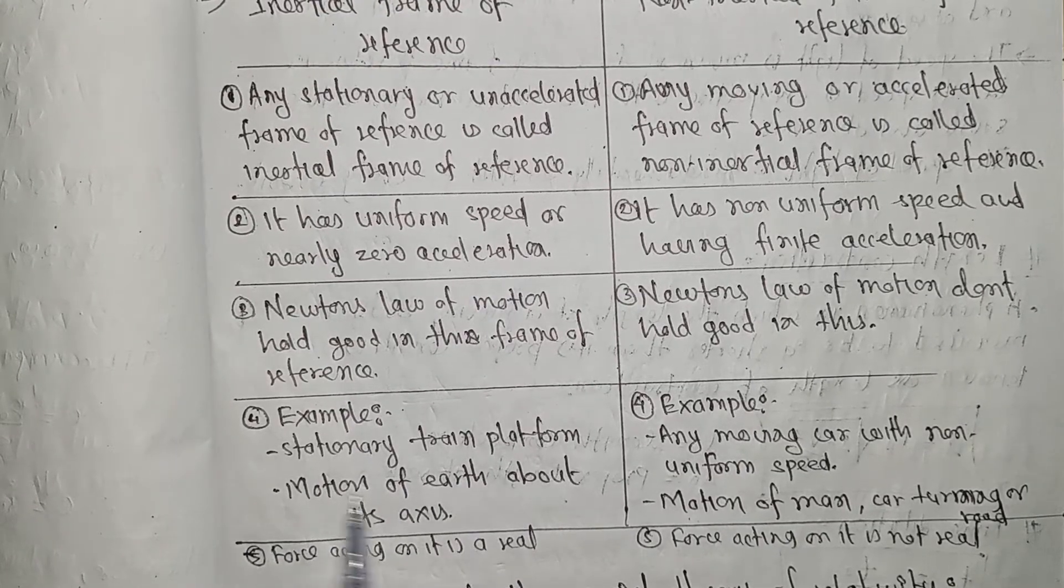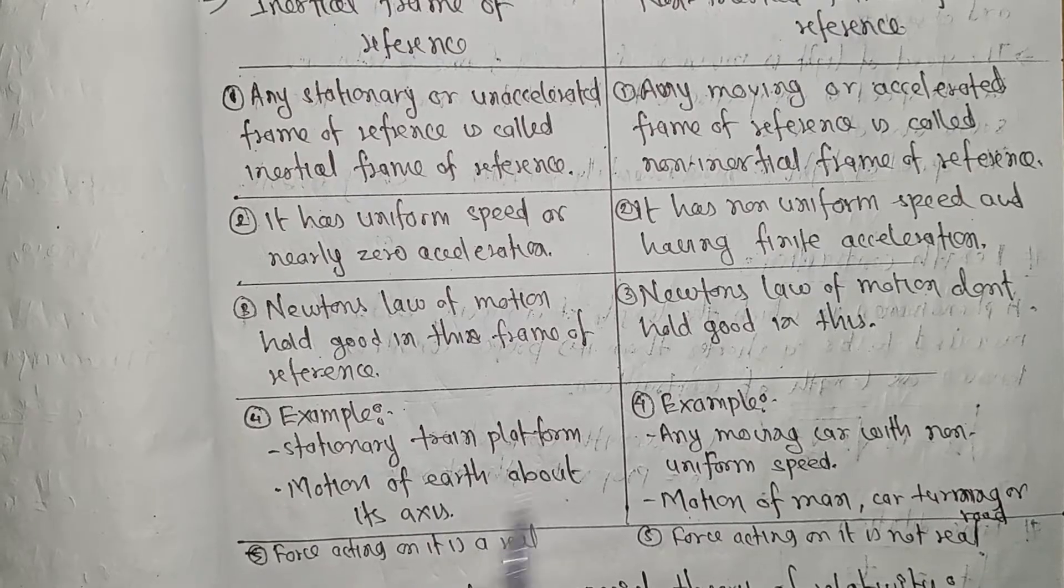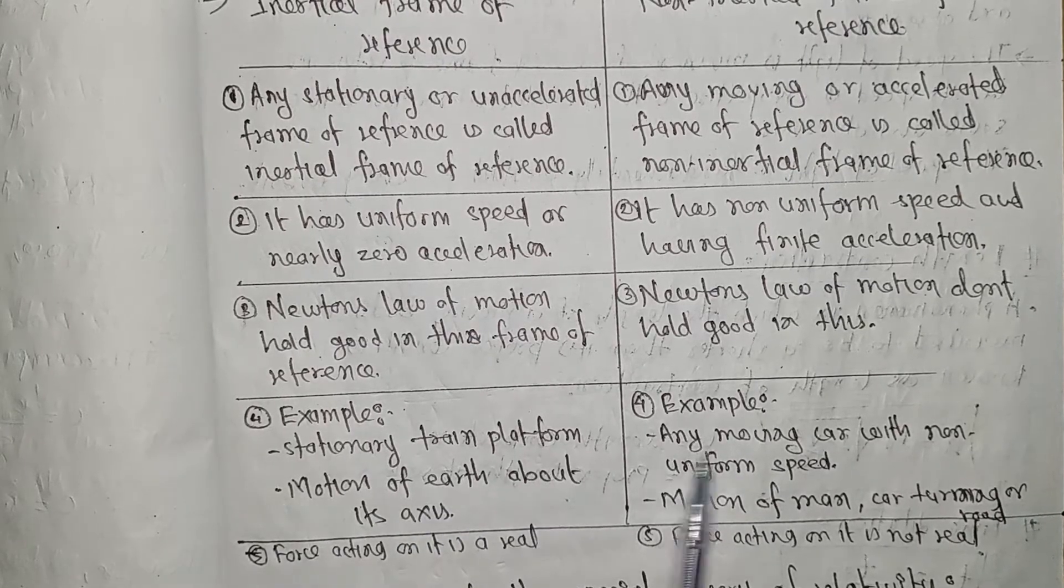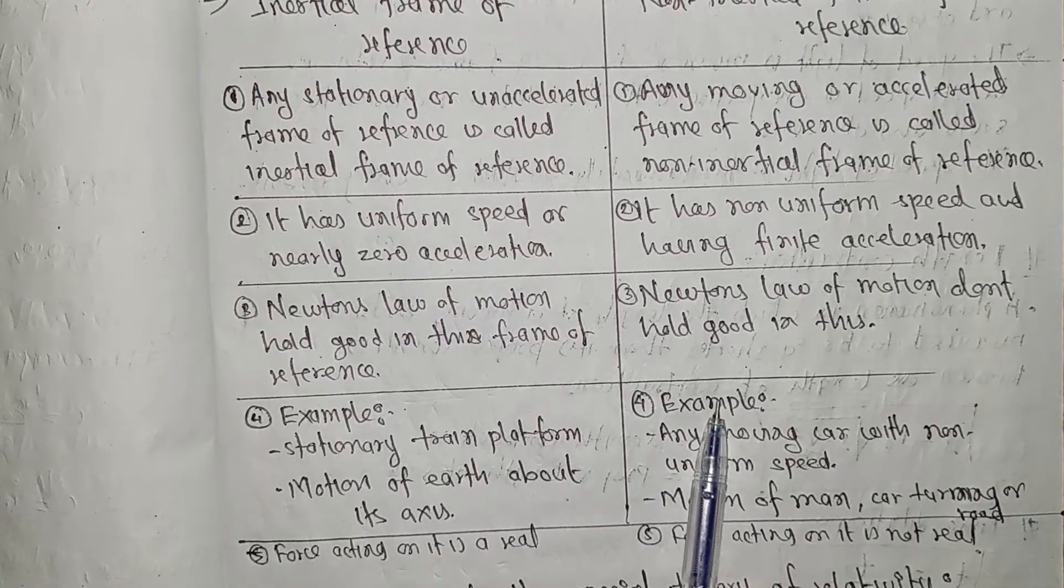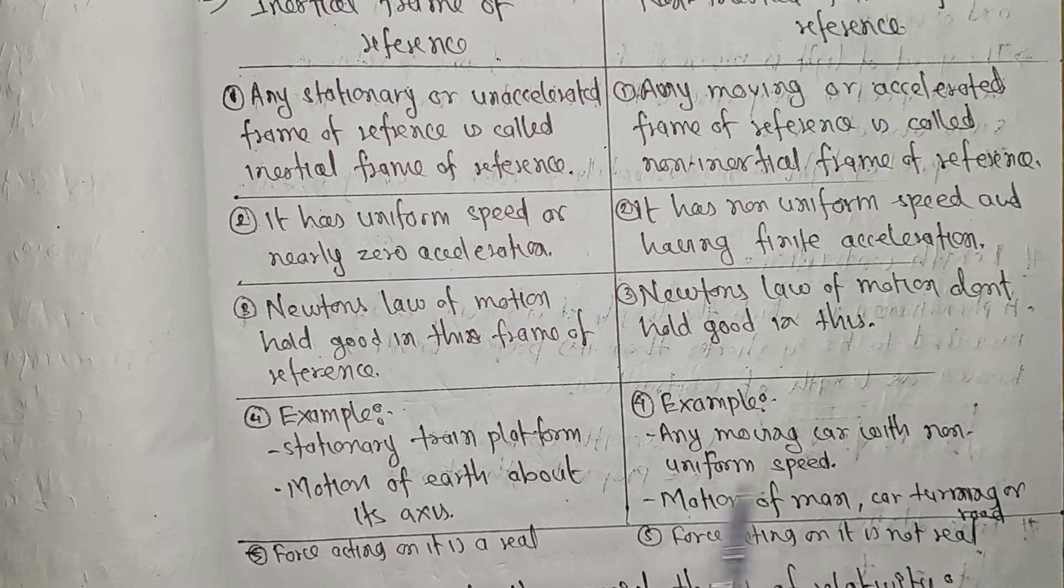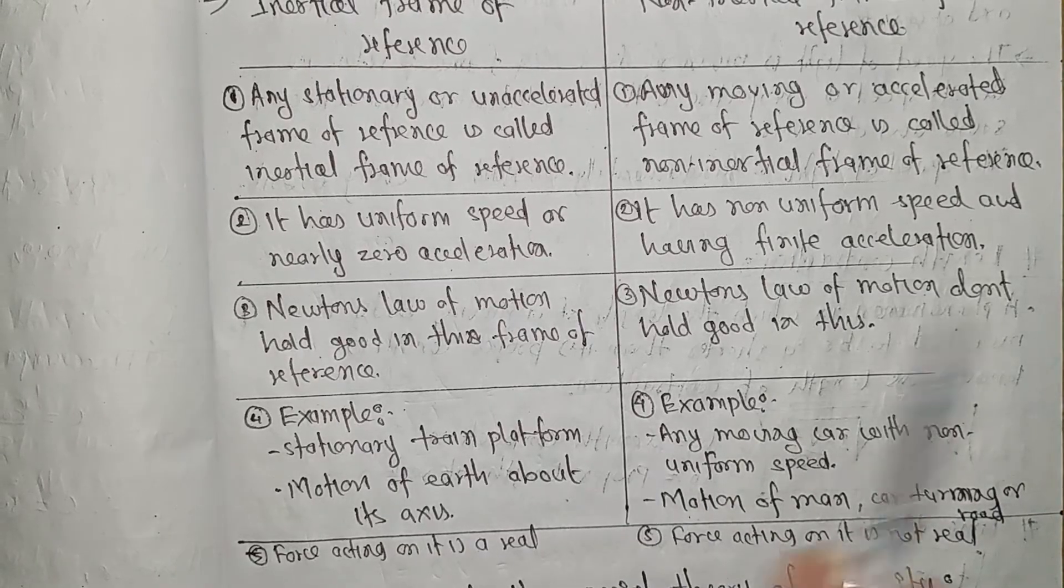Examples of inertial frame of reference include a stationary train platform and motion of Earth about its axis at constant velocity.